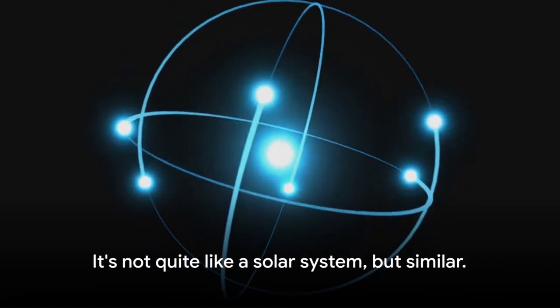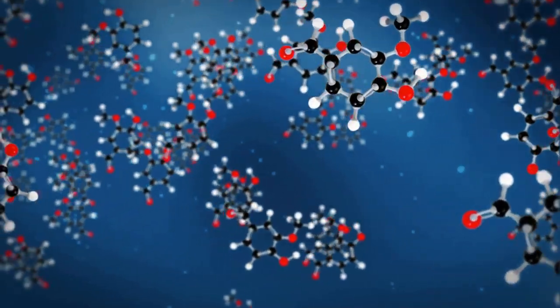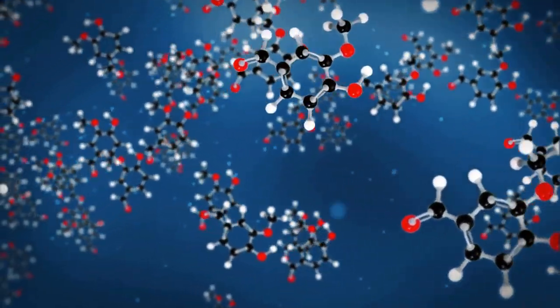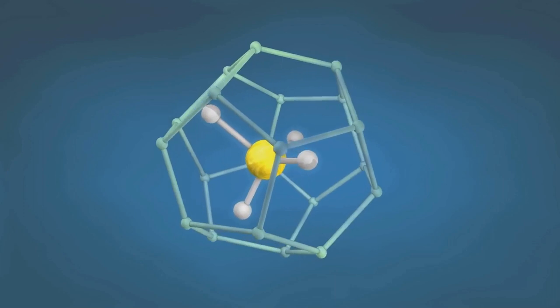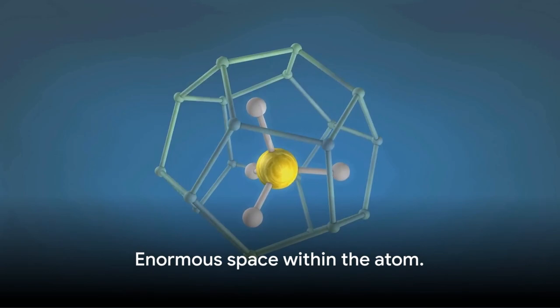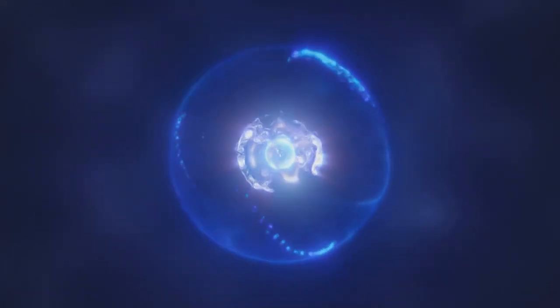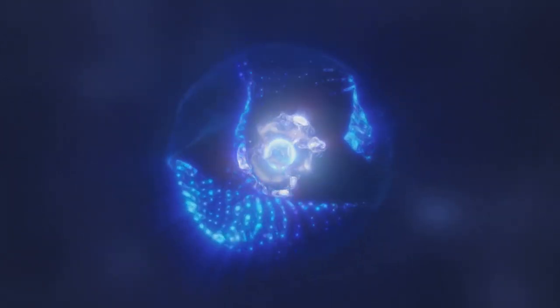But remember, while our analogy likens the atom to a solar system, it's not quite the same. You see, unlike a packed solar system, an atom is mostly empty space. The distance between the nucleus and its orbiting electrons is relatively vast. This space within the atom is so enormous that it accounts for most of the volume of the atom. But don't let this emptiness fool you. Within this space, powerful forces are at play, holding the electrons in their orbits and keeping the atom stable. Though tiny, these particles are the building blocks of everything in the universe.